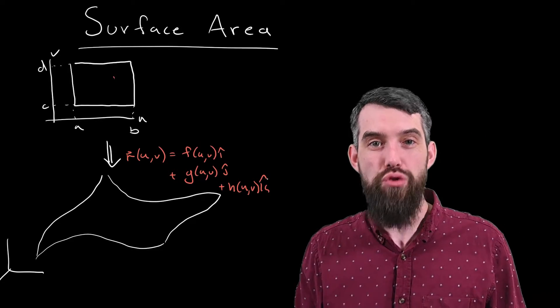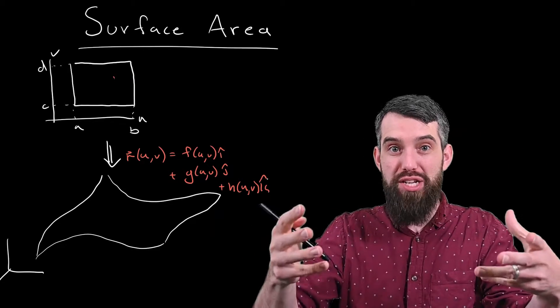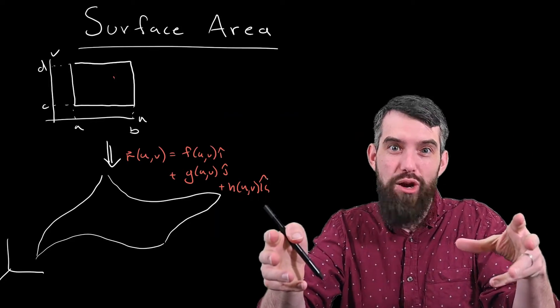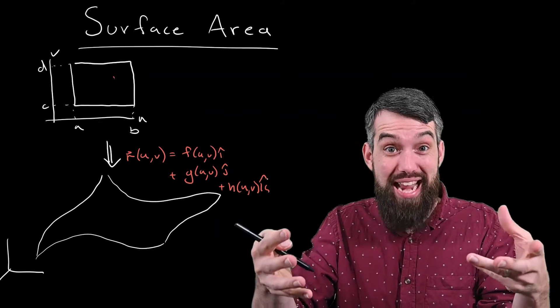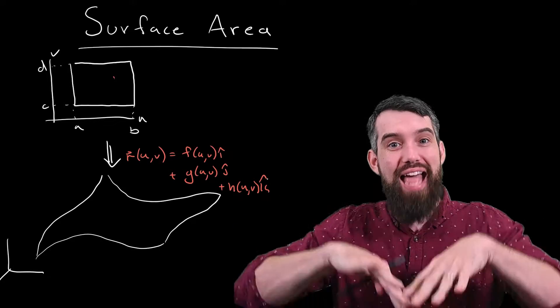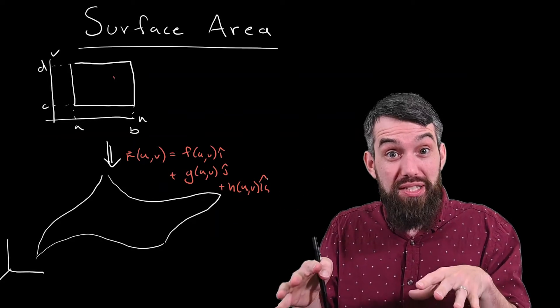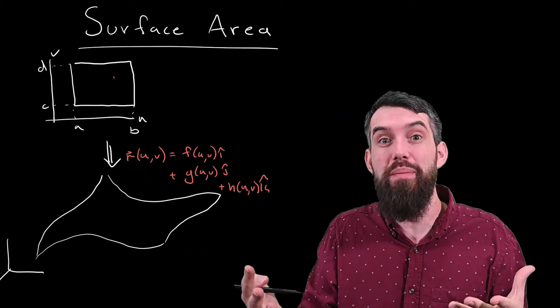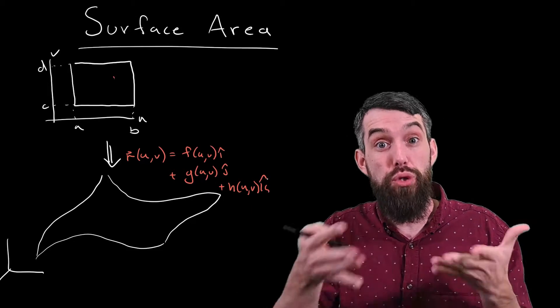It's the way you transform from the two-dimensional UV space, which is simple and easy to understand, it has just a rectangular region, to the more complicated geometry of this actual larger surface, a surface that might live in three dimensions despite itself being two-dimensional.